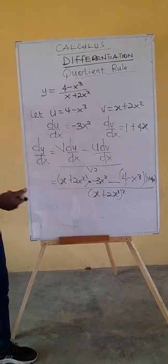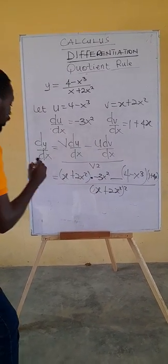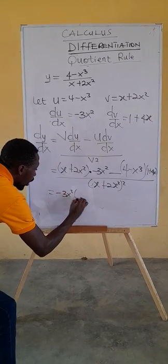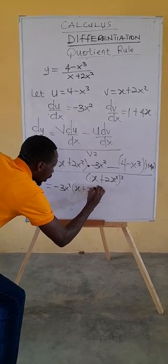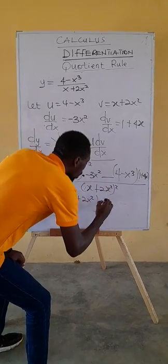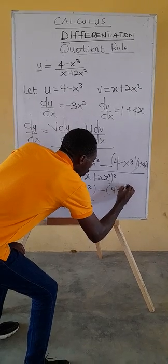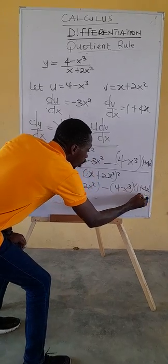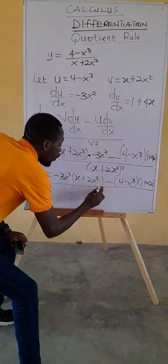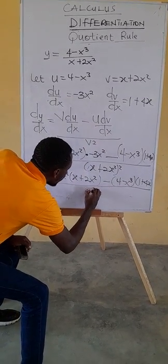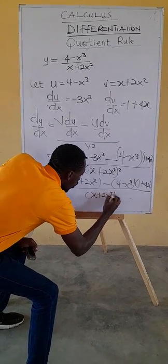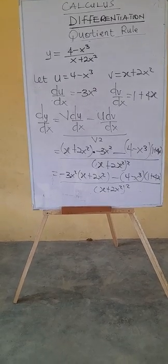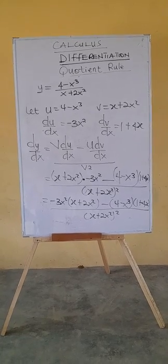Don't try to expand just yet — let's rearrange. We have: minus 3x squared times (x plus 2x squared), minus (4 minus x cubed) times (1 plus 4x), all over (x plus 2x squared) squared.